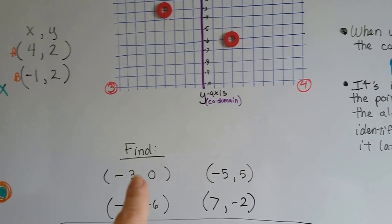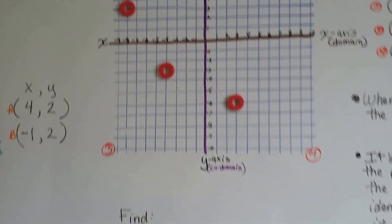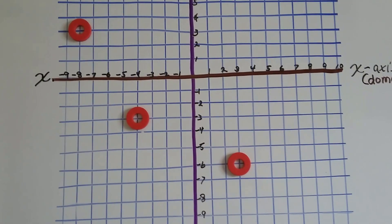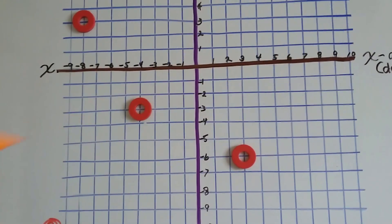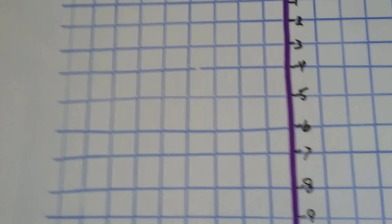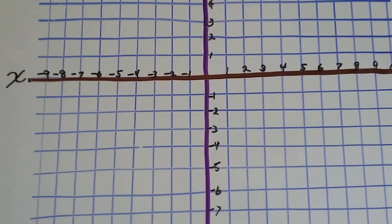Can you find these? Can you find negative 3, 0? Remember, we do x first. Negative 3, 0. So, here's the x. Let's take these off. Where would negative 3, 0 be?